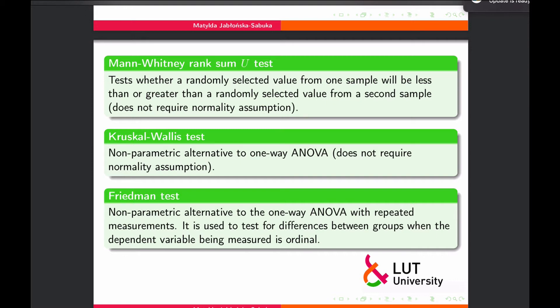The Kruskal-Wallis test is the non-parametric alternative to one-way ANOVA, so it does not require a normality assumption. In case you have data where you test three or more populations and after verifying the samples you realize they are not normally distributed or not close enough to normality, then you should consider the Kruskal-Wallis test.